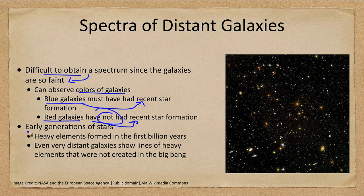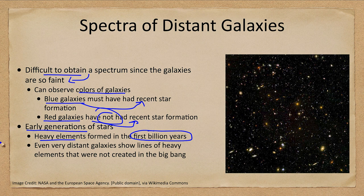The earliest generation of stars — we now know that the heavy elements formed in the first billion years of the history of the universe. It did not take long for those early generations of stars to form heavier elements. How do we know? Well, even really distant galaxies show spectral lines of heavy elements that were not created in the Big Bang.